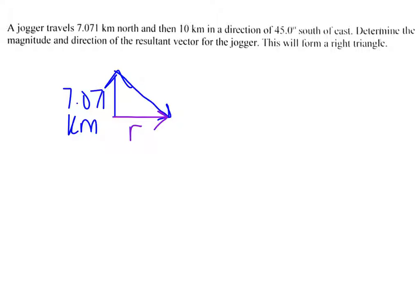Since it does form a right triangle, we've already figured out what direction it's going, so I'm going to jot that down here. To find our magnitude, the best way to do this is going to be to use Pythagorean theorem.